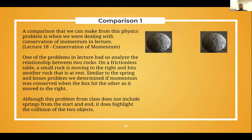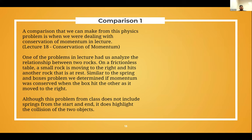For comparisons, a similar problem from physics lecture 18 on conservation of momentum involved analyzing two rocks on a frictionless table, where a small rock moving right hits another rock at rest. Similar to the springs and boxes problem, we determined that momentum was conserved when the moving rock hit the stationary one. Although that problem doesn't include springs, it highlights the key collision dynamics between the two objects.